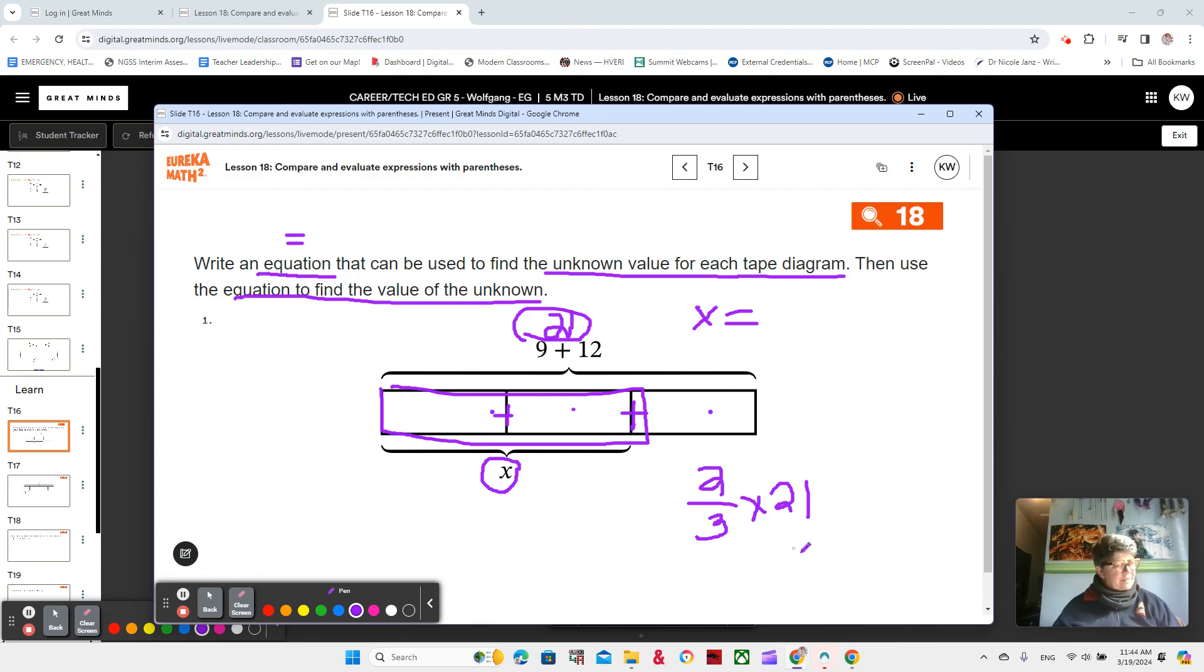So not two-thirds times 21, but 9 plus 12, because that is part of it, right? So two-thirds of 9 plus 12. Now, this is an important thing to notice because we are trying to write an equation based on the tape diagram. And the tape diagram does have the 9 plus 12. So we want to have two-thirds of 9 plus 12 equals X. And we can have our X on either side. We could have it over here, equals X, but we already have it there. So let's leave it there.